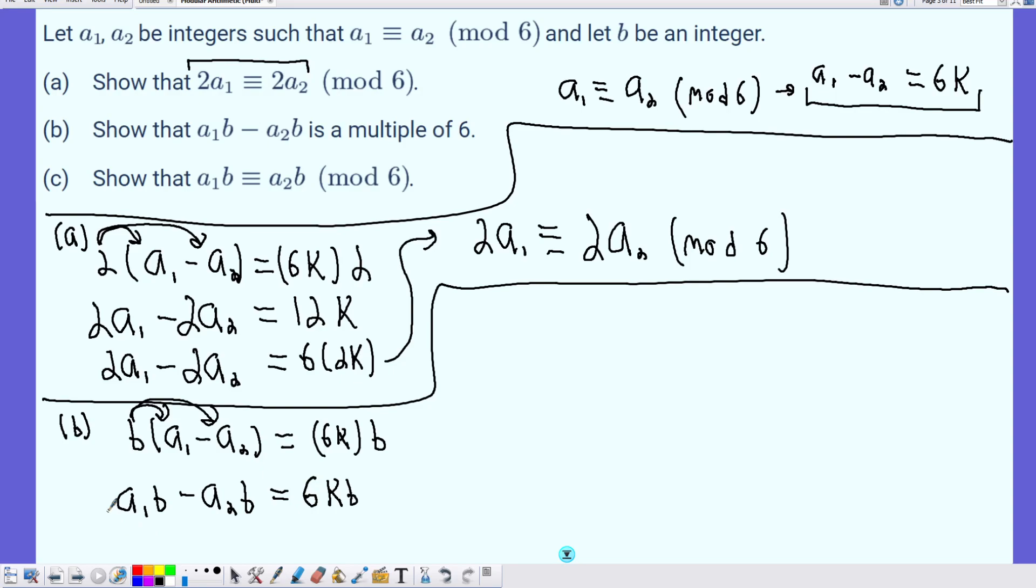And what that shows is that K times B must be an integer. K is an integer, we have already defined B as an integer. So KB, any integer times any other integer must be another integer.